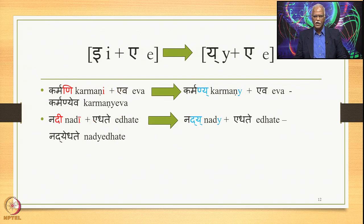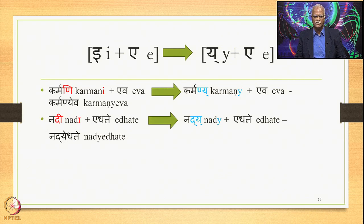For E plus A (where A represents its homogeneous sounds including long A), 6.1.77 applies giving Y plus A. 'Karmani + Ewa', where E is followed by A, gives 'Karmaniya Ewa'. Similarly, 'Nadi + Edhate' gives 'Nadya Edhate'. Note that vowel A does not have a short variety or a Plutha variety eligible for this operation, so only A is taken as the example.